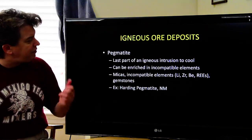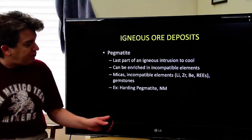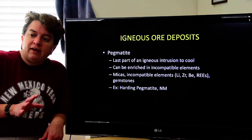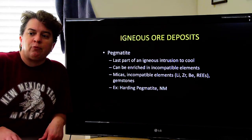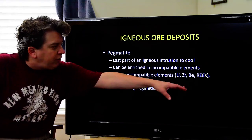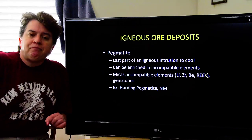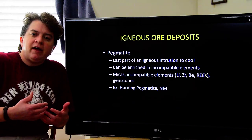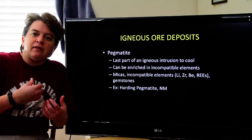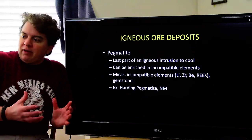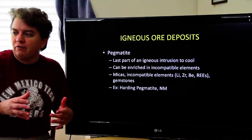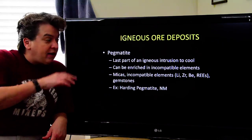Another type of igneous ore deposit is called a pegmatite. A pegmatite is the last part of an igneous intrusion to cool, and because of that, it can be enriched in incompatible elements — things like lithium, zirconium, beryllium, and rare earth elements. They're incompatible because they don't tend to bond with other things in a crystalline structure — they like to stay in liquid form, due to weird charge or large size.